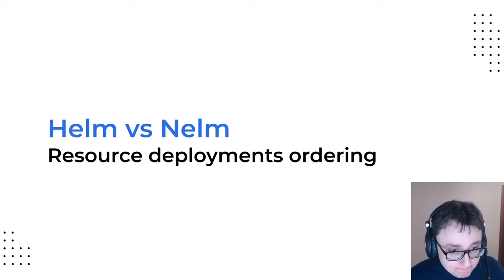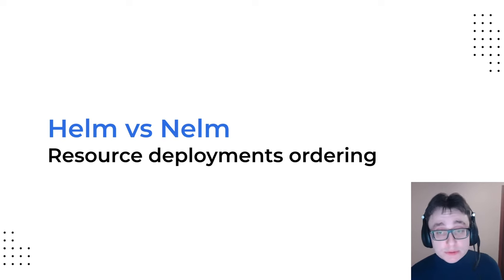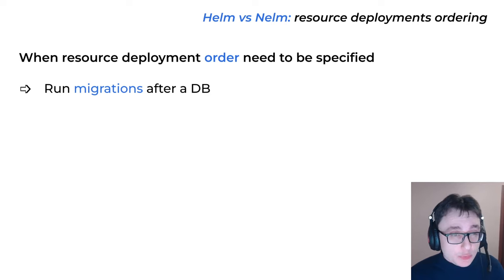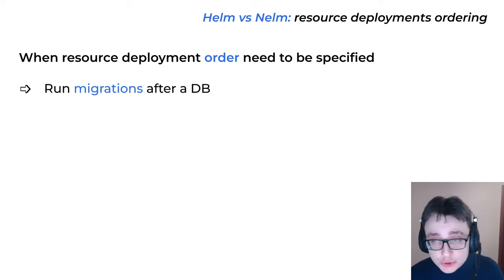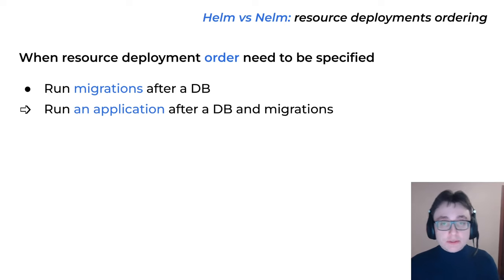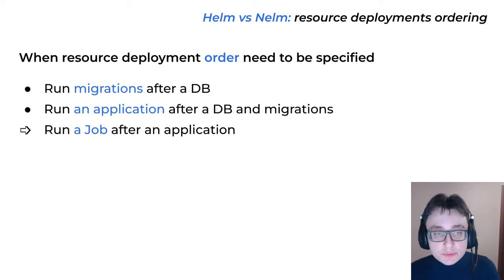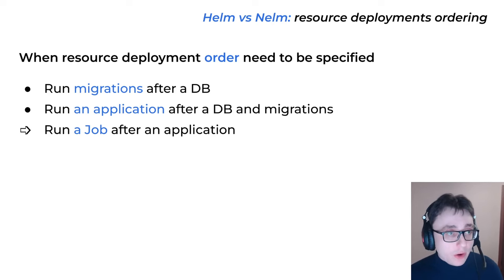We have two new mechanisms to configure the specific deployment order of resources during a release. When do you even need to configure a specific order? For example, when you need to run a migrations job after a database is up, or run an application only after the database is ready and migrations are executed, or run a custom job only after an application is created and ready. Pretty basic stuff that you will very, very often need.